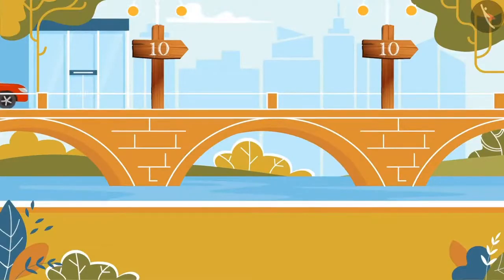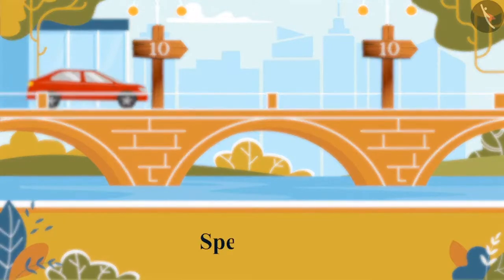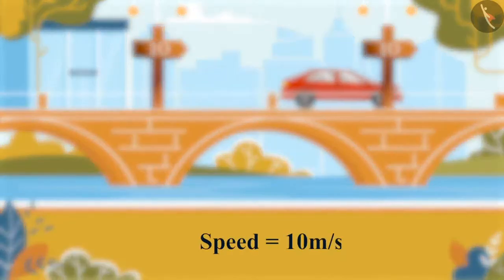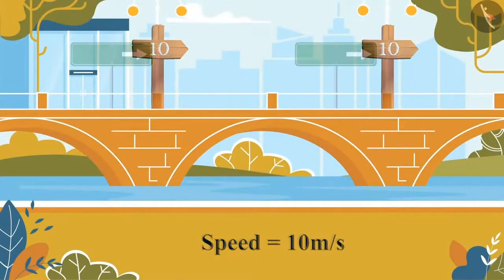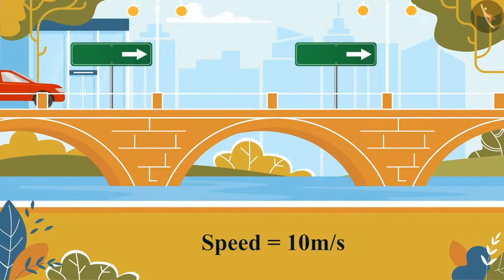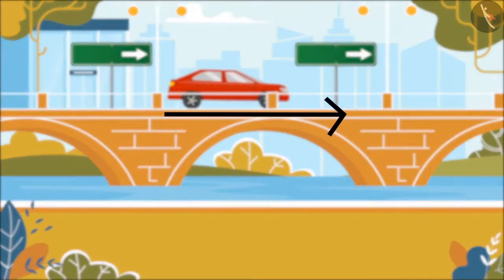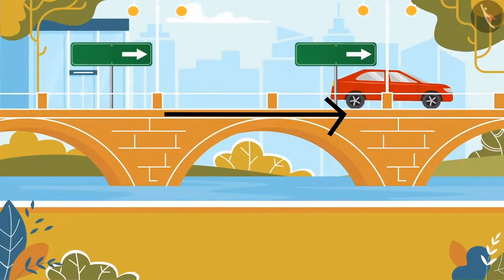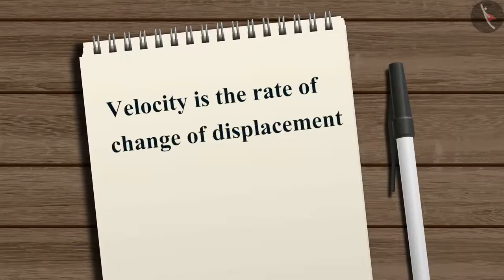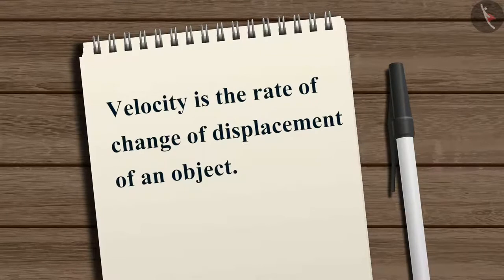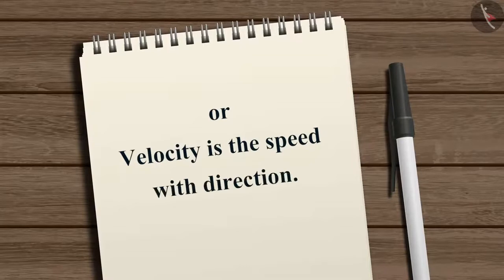Let's start by considering an object moving at a certain speed, let's say 10 meters per second. Now, along with the speed, if we specify the direction of motion also, then the whole quantity is known as velocity. Velocity is the rate of change of displacement of an object, or simply, velocity is the speed with direction.